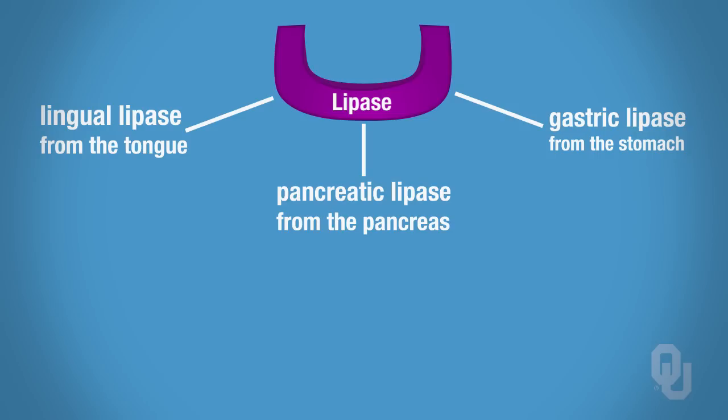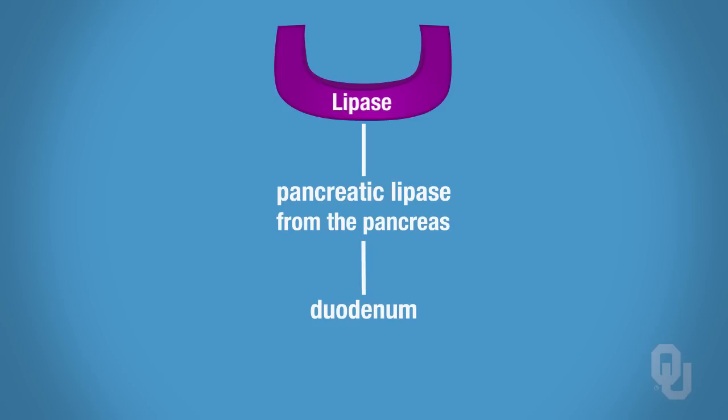When pancreatic lipase is secreted from the pancreas, it will enter into the duodenum. So pancreatic lipase actually functions in the duodenum to break down fat, but it is synthesized and secreted by the pancreas. Most lipid digestion occurs in the duodenum.